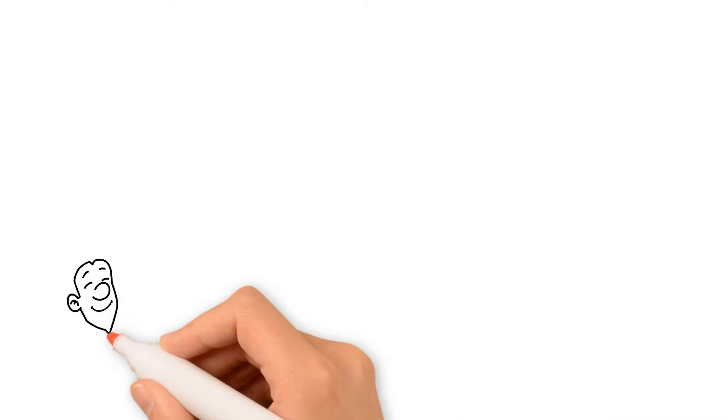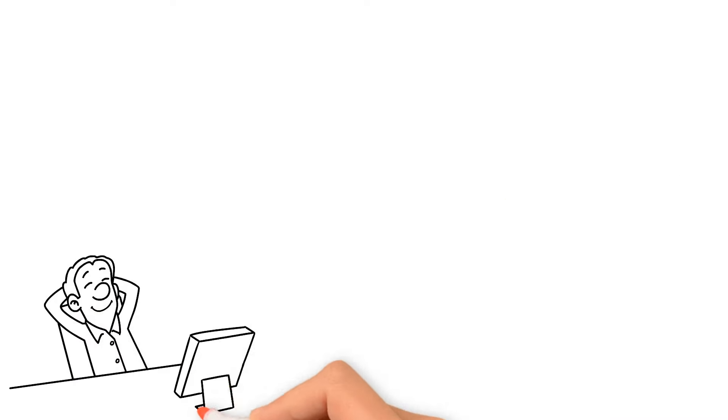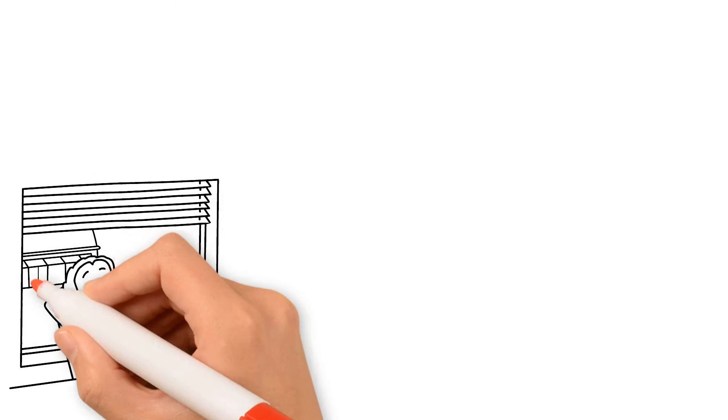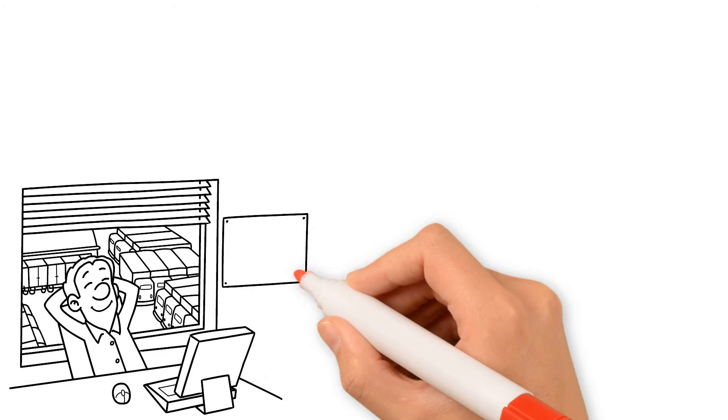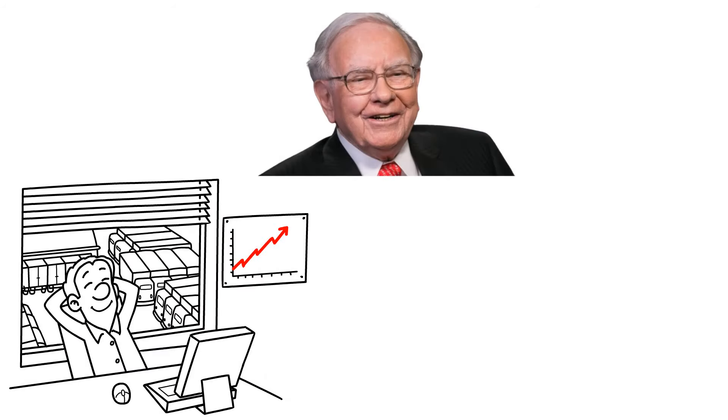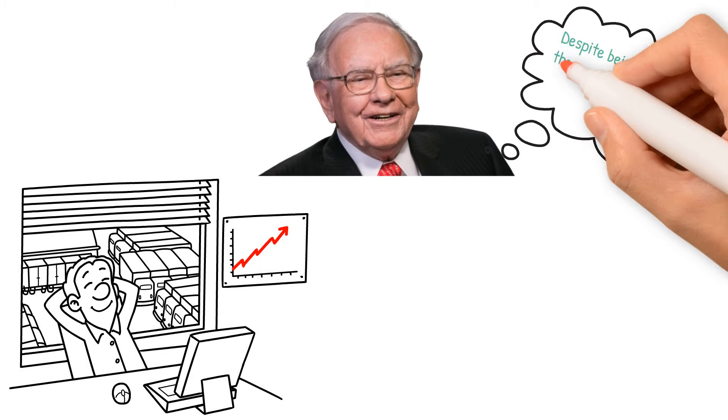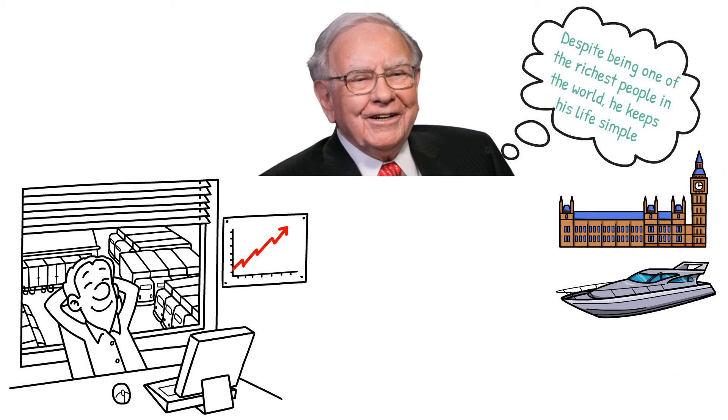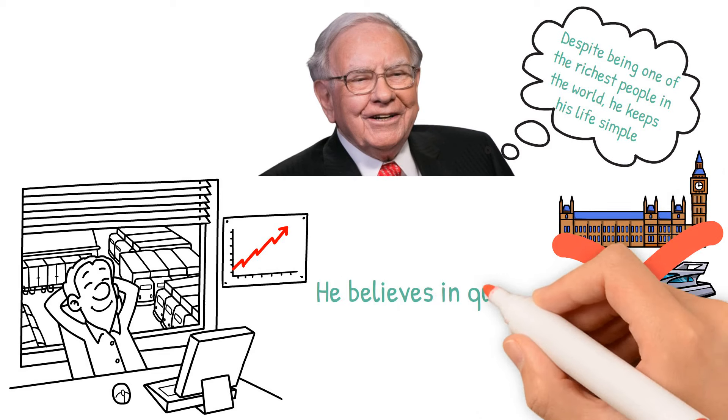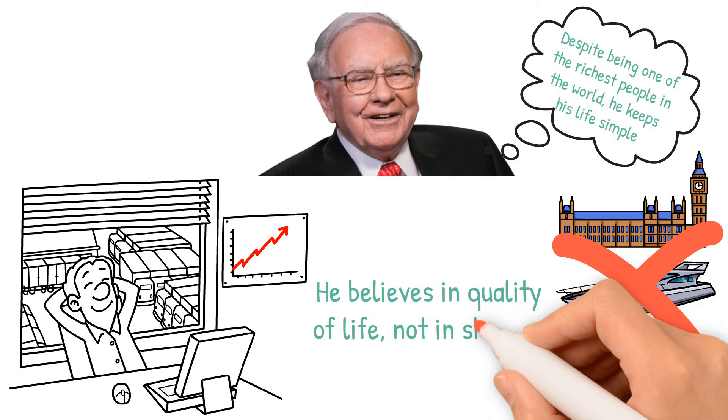Living below your means is all about avoiding those extra expenses that we don't really need. This doesn't just help increase our savings, it also reduces financial stress. Buffett is a great example of this. Despite being one of the richest people in the world, he keeps his life simple. No luxurious mansions, yachts, or sports cars for him. He believes in quality of life, not in showing off with consumerism.